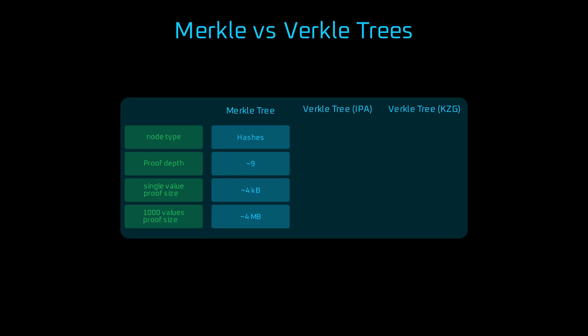Verkle proofs, in contrast, scale much better. Even with the heavier math of inner product arguments or pairings, they're more efficient. For one key, the IPA-based verkle proof is around 600 bytes, and KZG-based verkle proof 200 bytes. This is where the IPA scheme really shines.